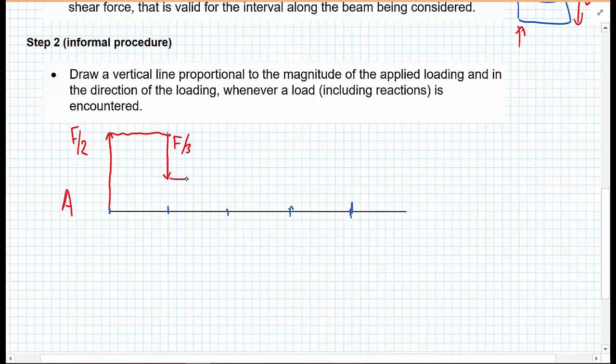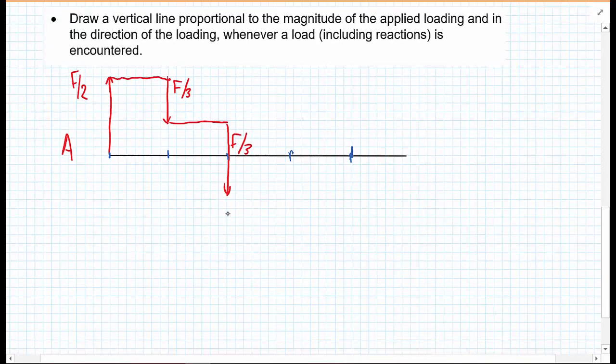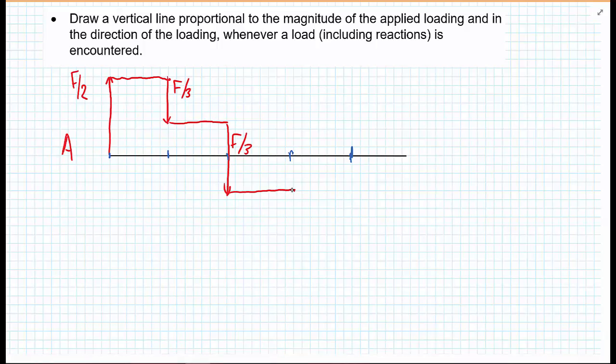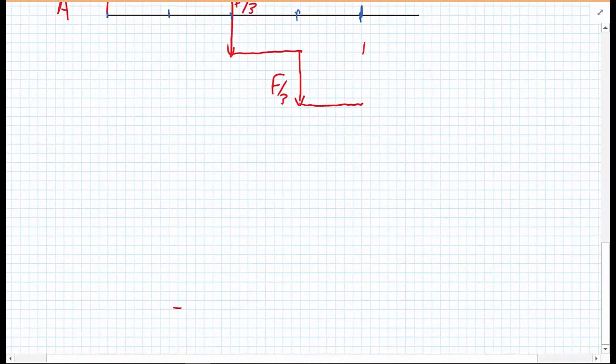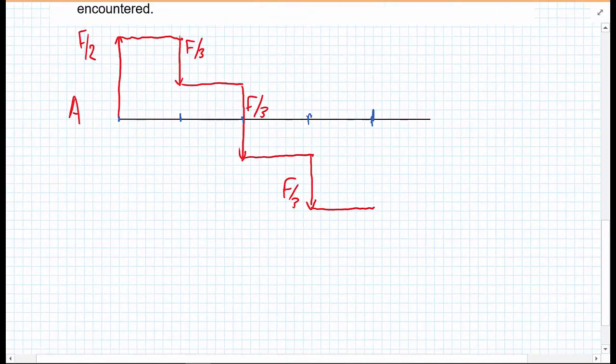What we can do is walk along the beam. We'll just draw a line, a horizontal line, until we reach the point L upon 2. And at the point that we reach L upon 2, we draw a line proportional to the loading applied. And now that loading was F upon 3, F upon 3 pointing downwards. And again, the shear force won't change until we reach the next point that a load is applied. And the next point that a load is applied is at L upon 2. And again, at L upon 2, we have a load F upon 3.